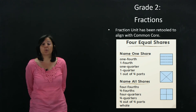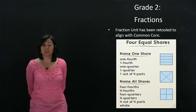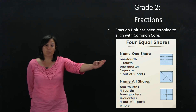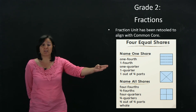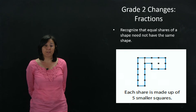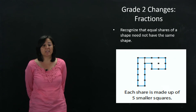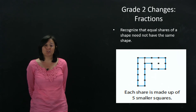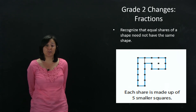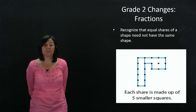Another change that we've made is work with fractions. We've retooled our work with fractions so that it aligns with the Common Core. Now the focus is not on standard notation but on word notation or number and word notation for children to name the equal parts of a shape. We've also added work so that children can recognize that the equal shares of a shape need not be the same shape. Here you'll see a shape that's divided into two equal shares, but the shares don't look exactly the same — you can see that each share is made up of five smaller squares.